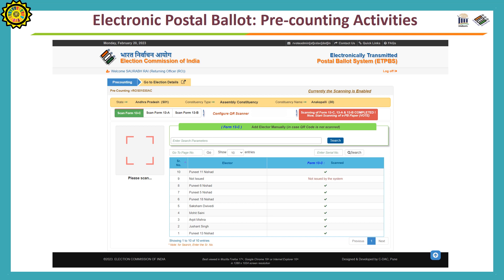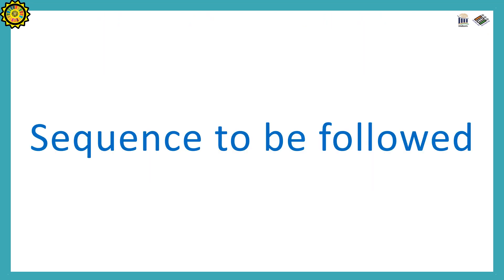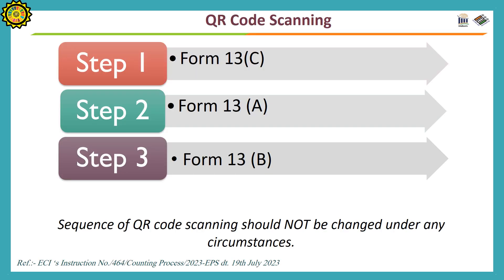This page will be displayed on the portal. Sequence to be followed: the sequence for scanning the forms will be — first, form 13C will be scanned, then form 13A, and last form 13B. The sequence of QR code scanning will not be changed under any circumstances.